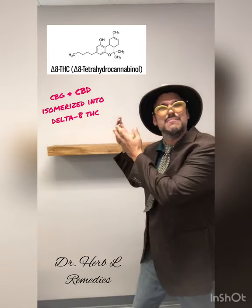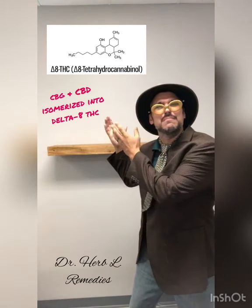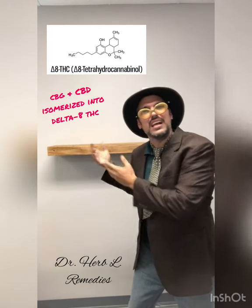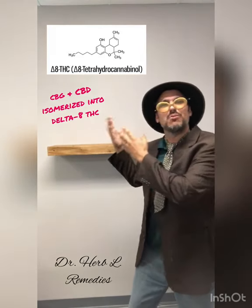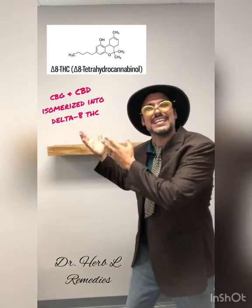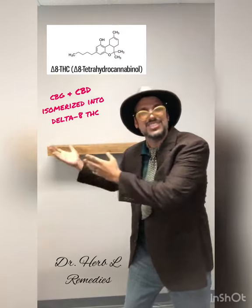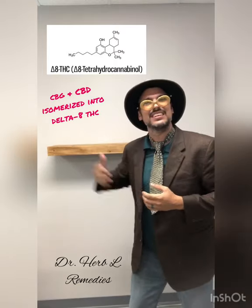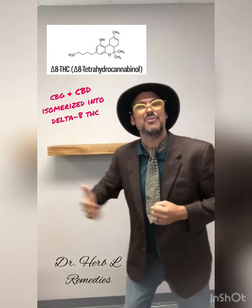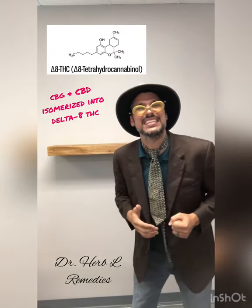So they start with CBG and CBD oil, and through the process of isomerization they come out with Delta 8 THC.